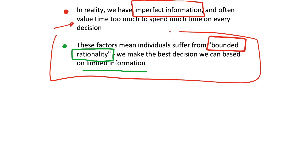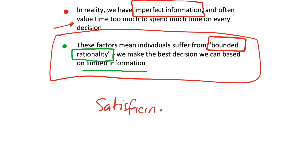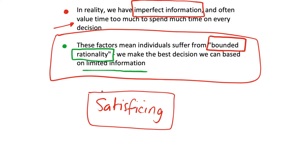So what we have is bounded rationality, or what we might call satisficing. This is where we effectively just make a decision that is satisfactory to us instead of spending all the time to find the absolute best one. For example, if we're in a restaurant and the menu is 50 pages long and on page one we see a burger we'd quite like, we decide it's not worth reading the other 49 pages to see if there's something better. It may not be the welfare-maximizing choice, but it is satisficing.